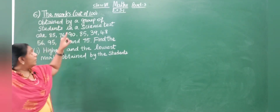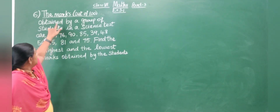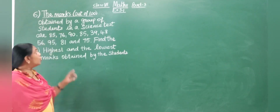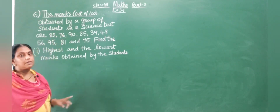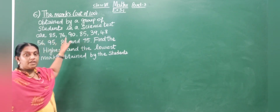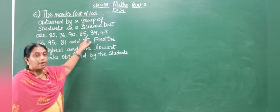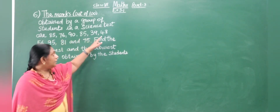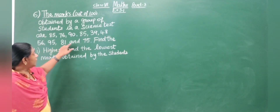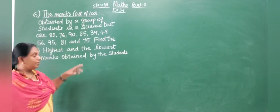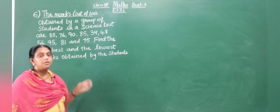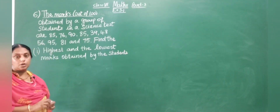The marks out of 100 obtained by a group of students in a science test are: 85, 76, 90, 85, 39, 48, 56, 95, 81, and 75. Find the highest and the lowest marks obtained by the students.